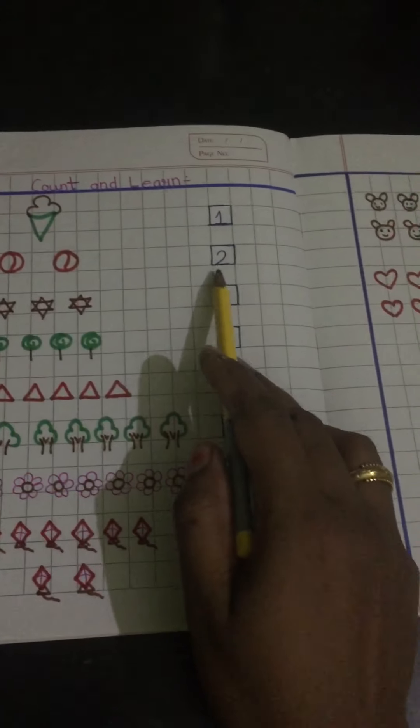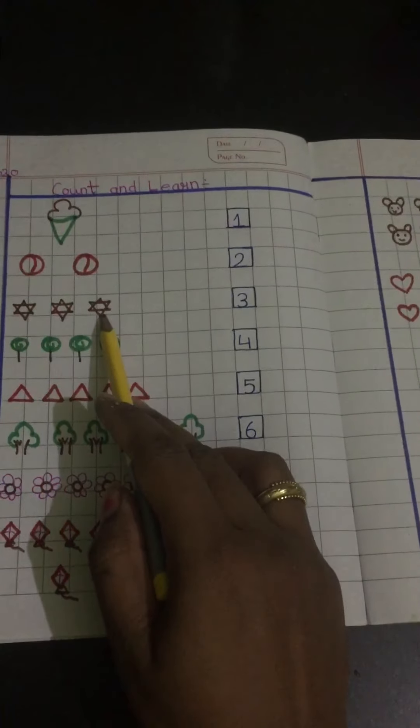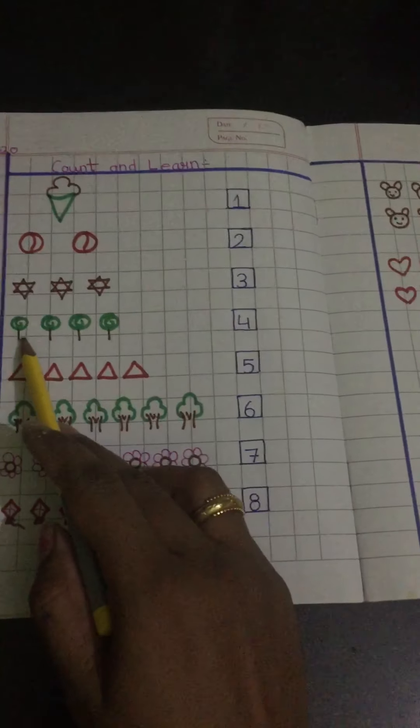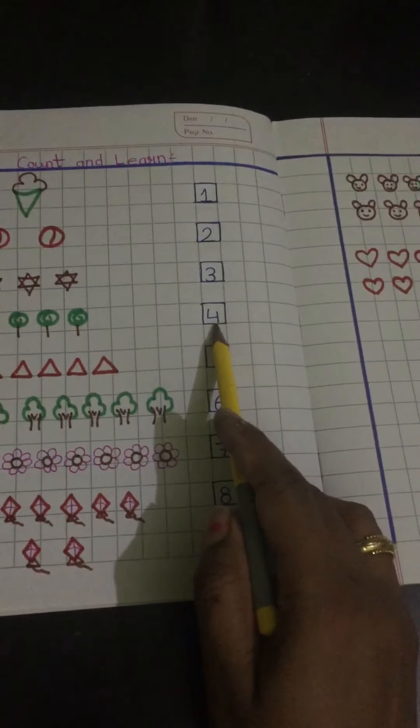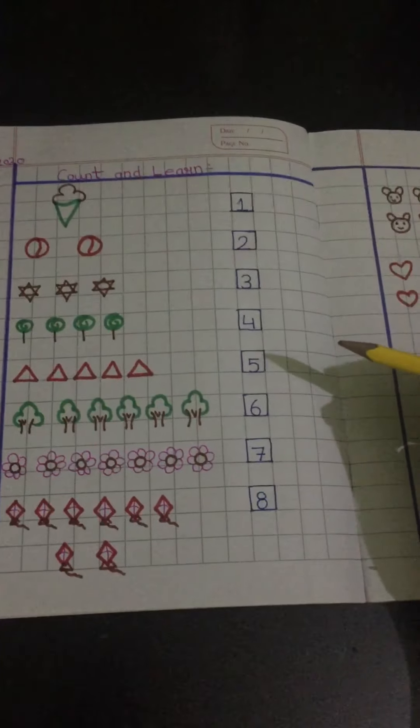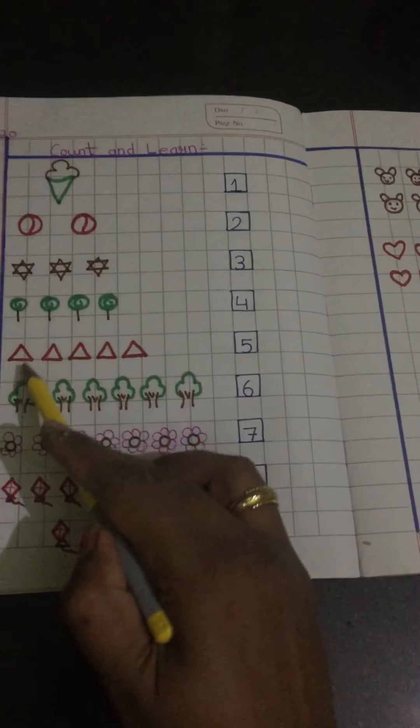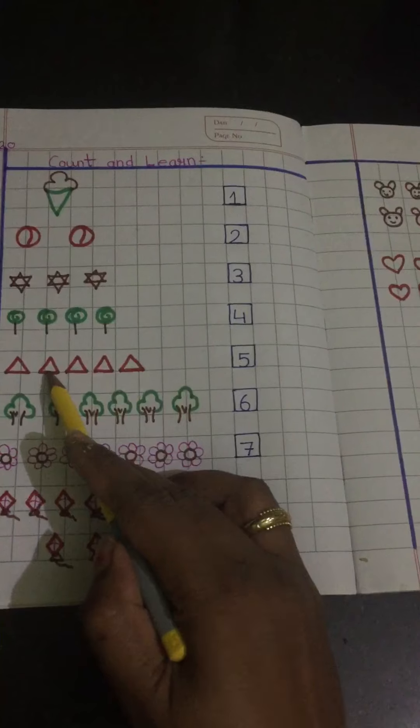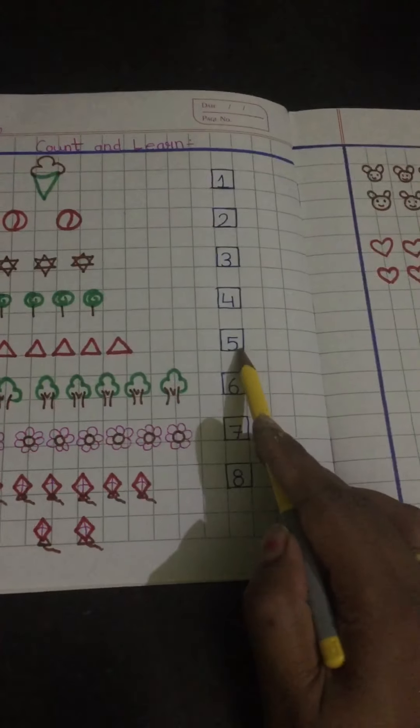Two, two. One, two, three, three. One, two, three, four, four. You all have to keep repeating with me, only then you will be able to learn properly, okay? One, one, two, two, three, four, five, five, five.